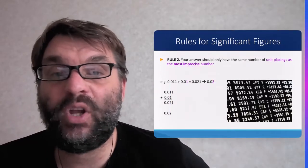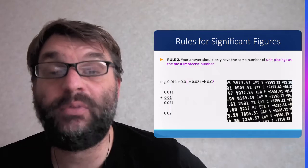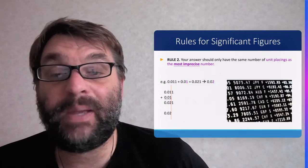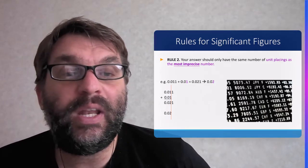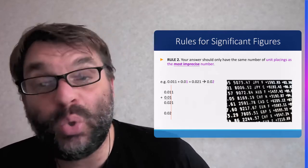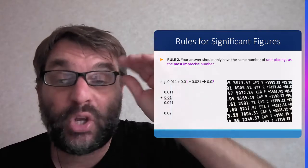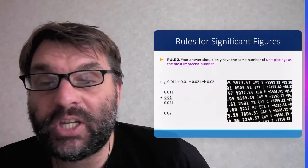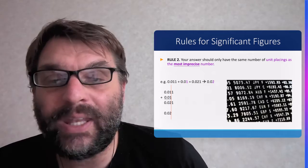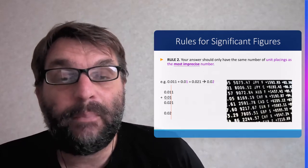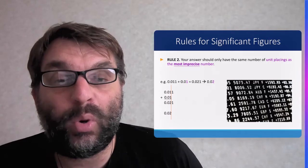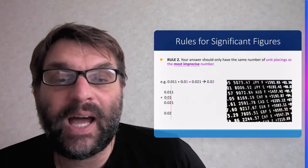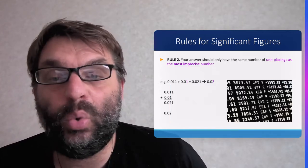And the other rule you have to know for significant figures is the addition and subtraction of significant figures. And basically it's the same thing about imprecise numbers. Your answer should only have the same number of unit placings as the most imprecise number. So using the example we have here, if you add 0.11 to 0.1, the answer you get from your calculator will be 0.21. But in terms of significant figures, because 0.01 has less significant figures than 0.11, then the answer has to be 0.02.